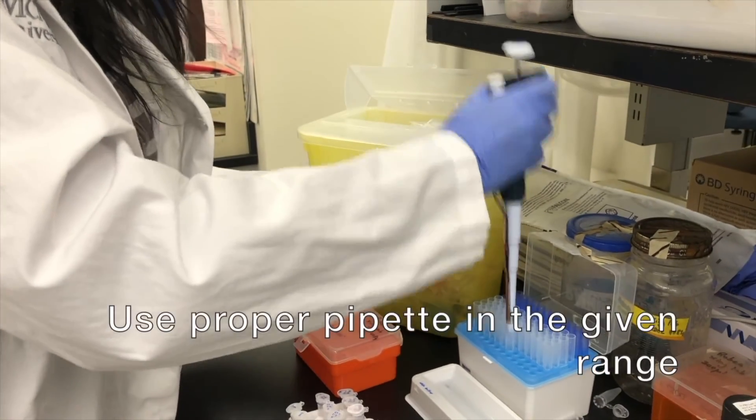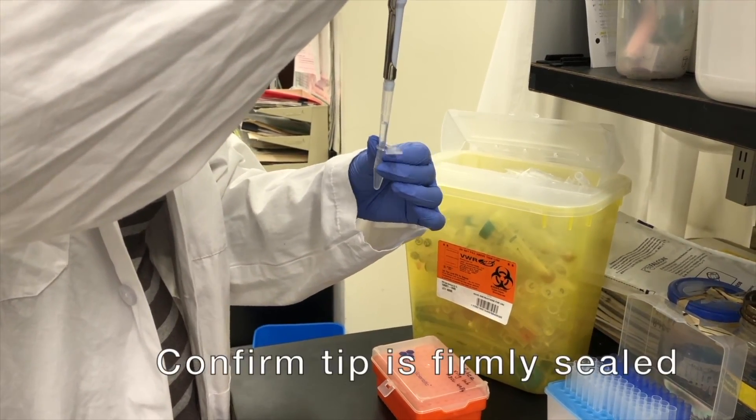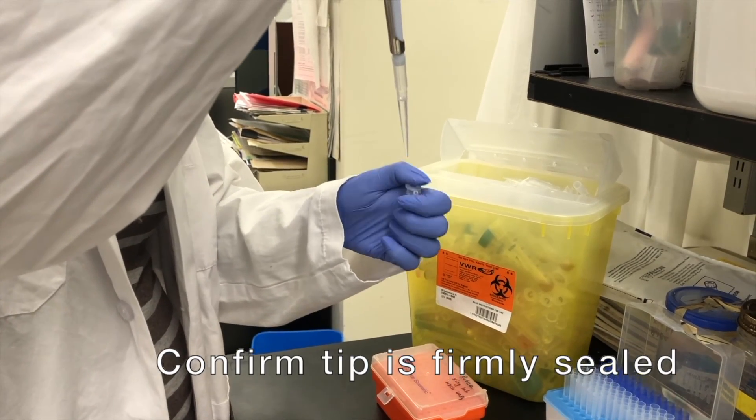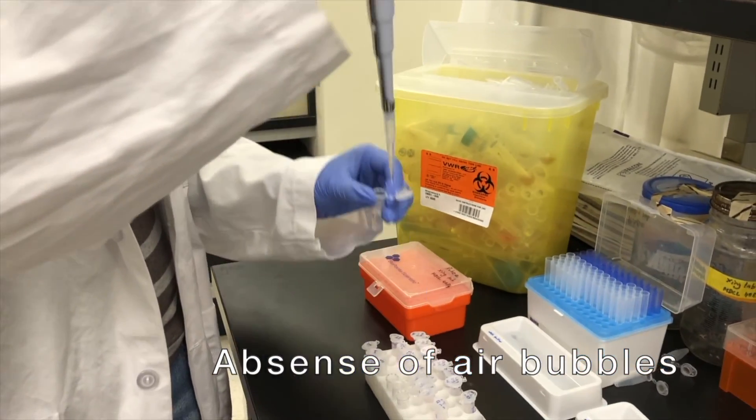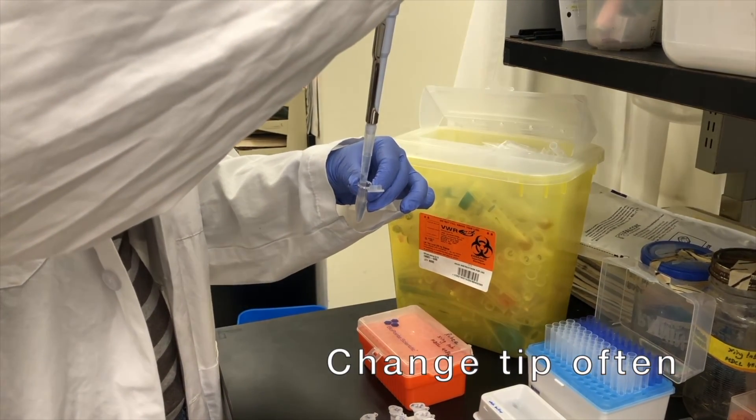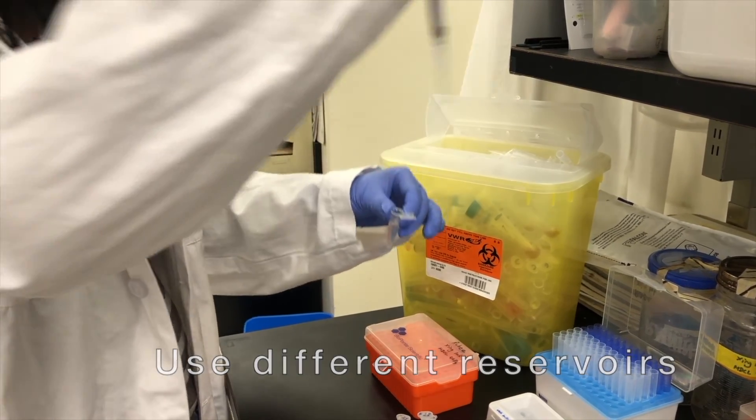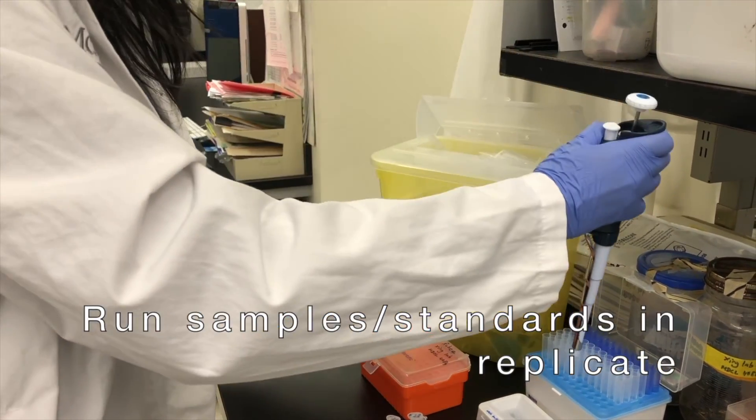Proper technique includes using the correct pipette that is within the range suggested by the manufacturer, confirming the tip is firmly sealed on the pipette, confirming the absence of air bubbles while pipetting, changing tips between each standard, sample, or reagent, using different reservoirs for each reagent, and always running samples and standards in replicate.